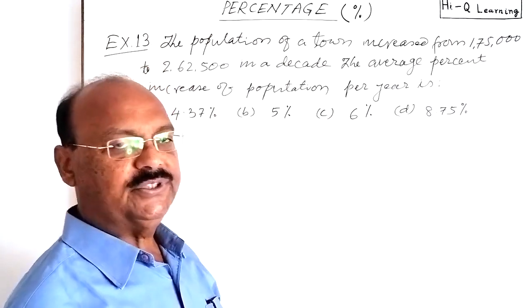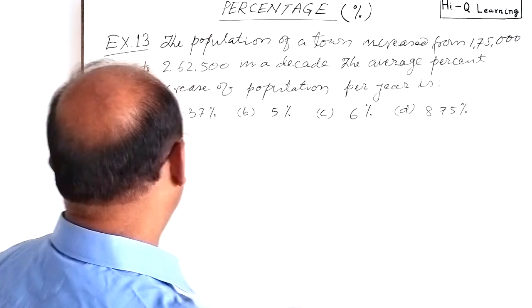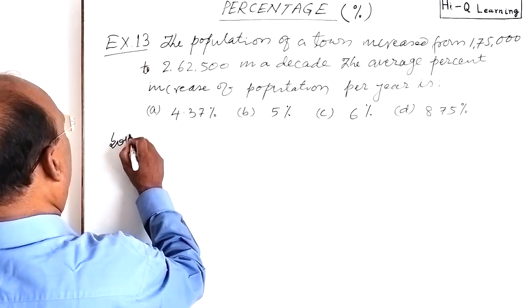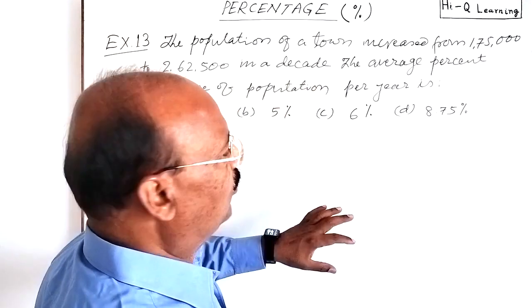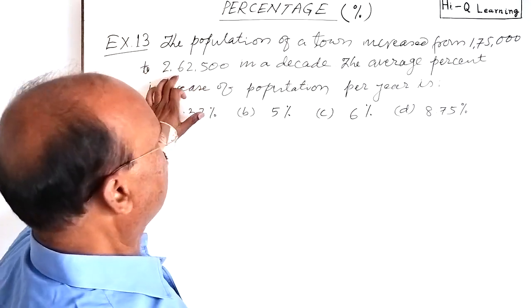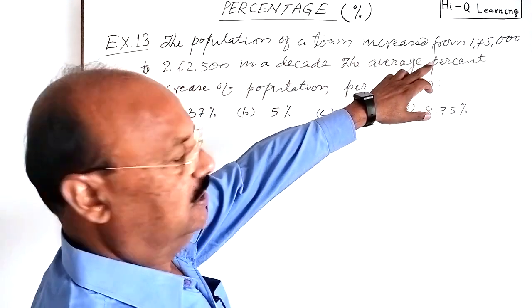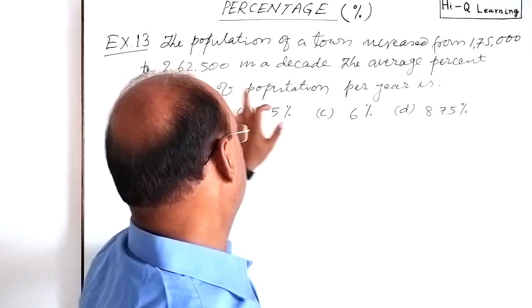Four options are given: A, B, C, D. We have to choose the correct one. So let us see the solution here. First of all, let us find out the increase in population by subtracting these two numbers - initial population and final population.